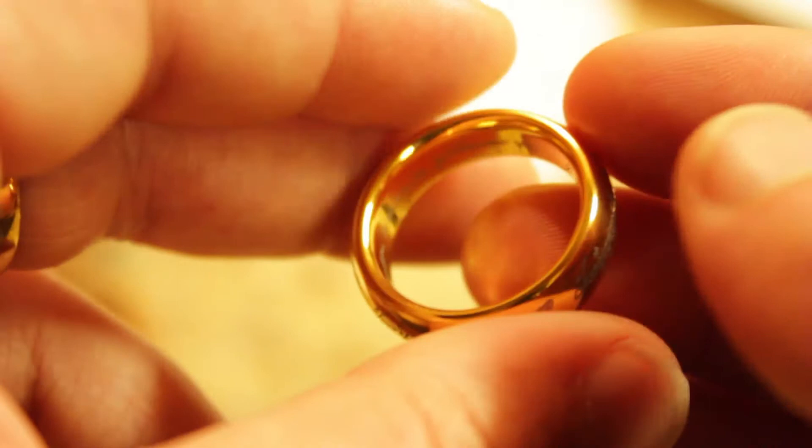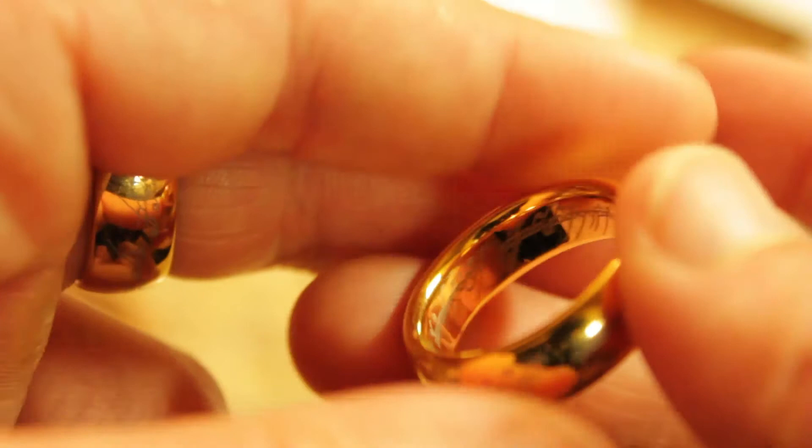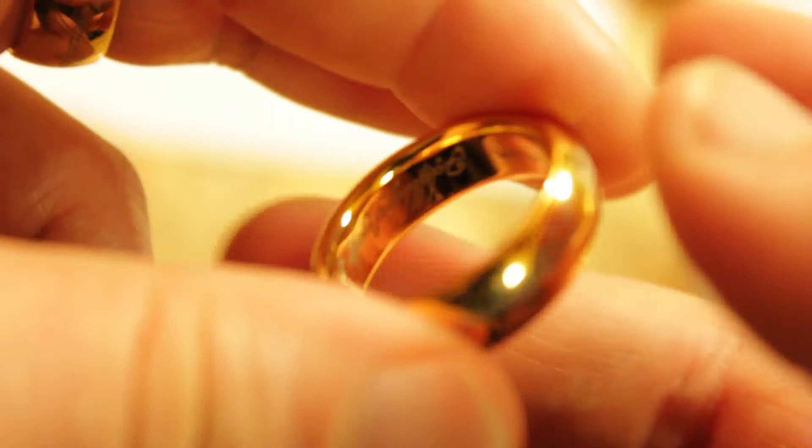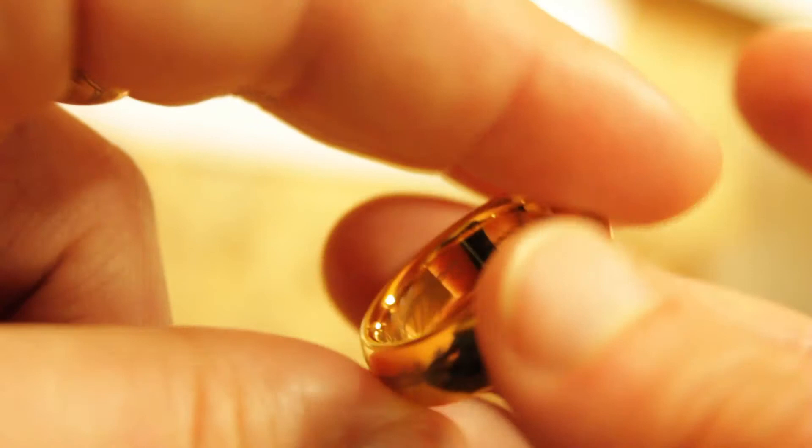There is a trademark in the inside of the One Ring, which does annoy me a little bit because if you're using this as a prop, you don't really want the Weta signature inside of the One Ring. But I guess it's made to be worn and to use as a display piece, so in that respect, that's fine and dandy.